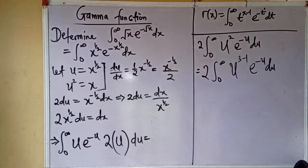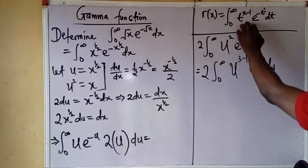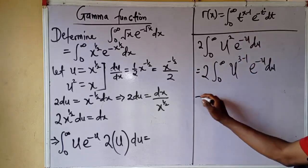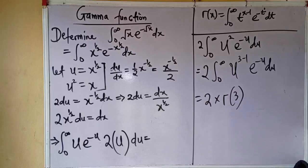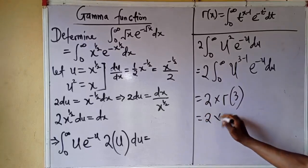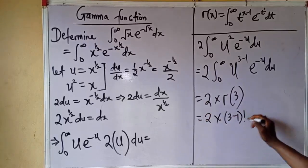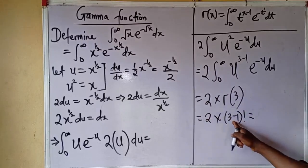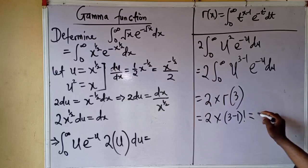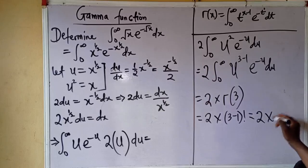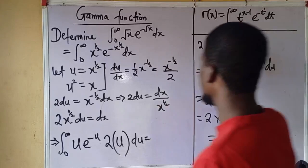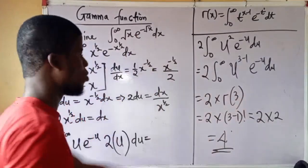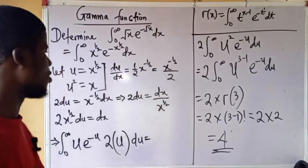This equals 2 times the integral from 0 to infinity of u to the power of 3 minus 1, times e to the power of minus u, du — using the standard form. So this is 2 times gamma of 3. Gamma of 3 equals 3 minus 1 factorial, which is 2 factorial, which is 2. So we have 2 times 2, which equals 4. This integral is equal to 4.